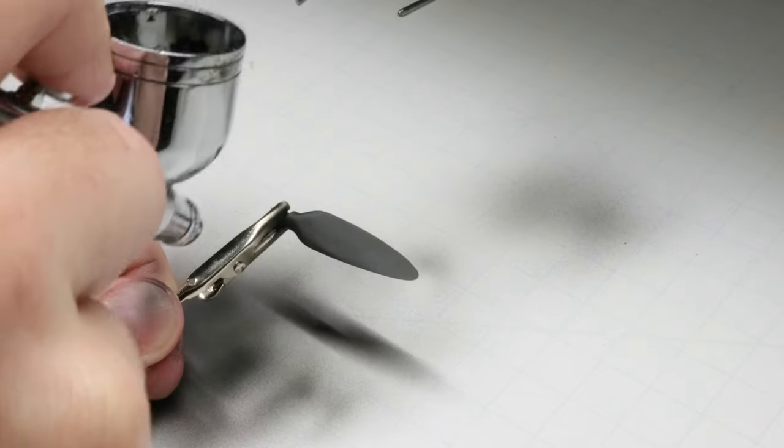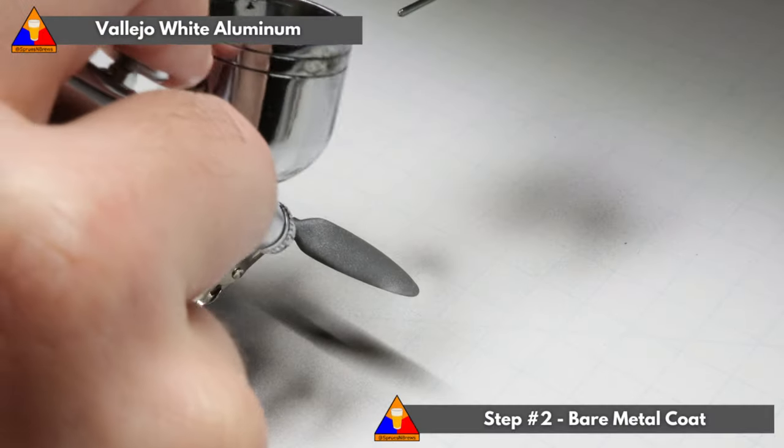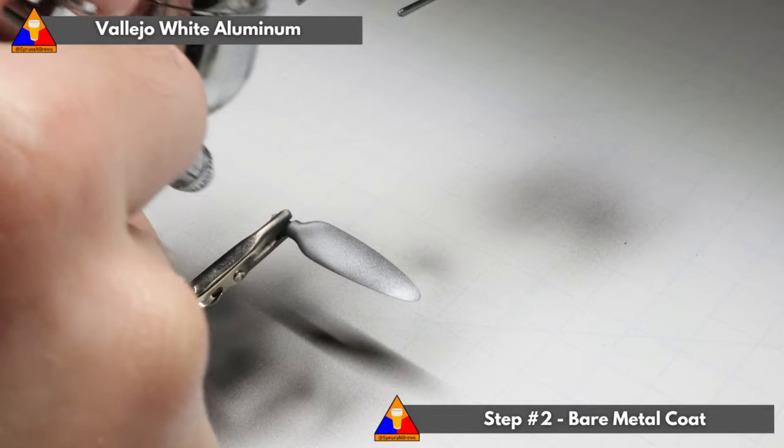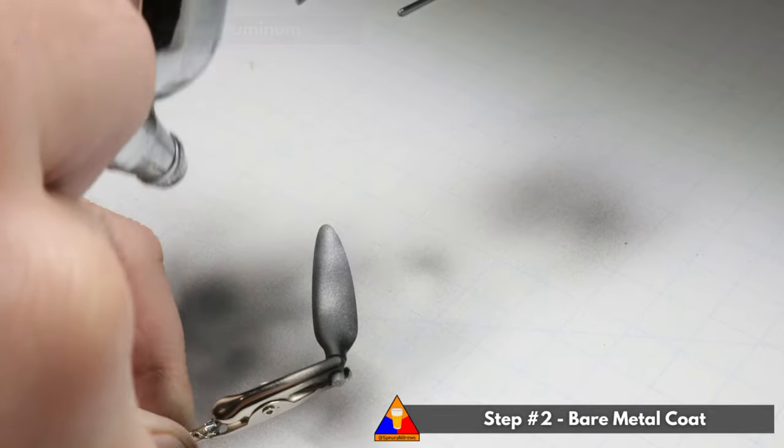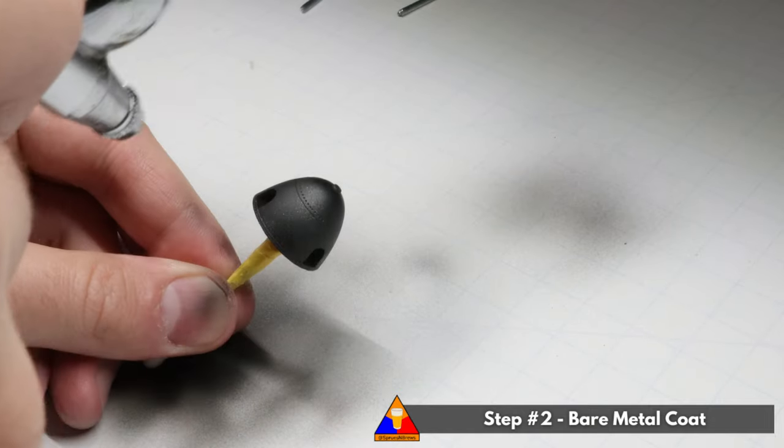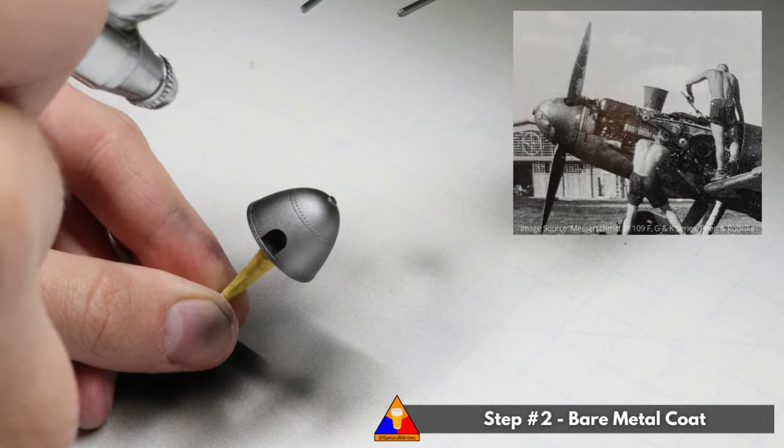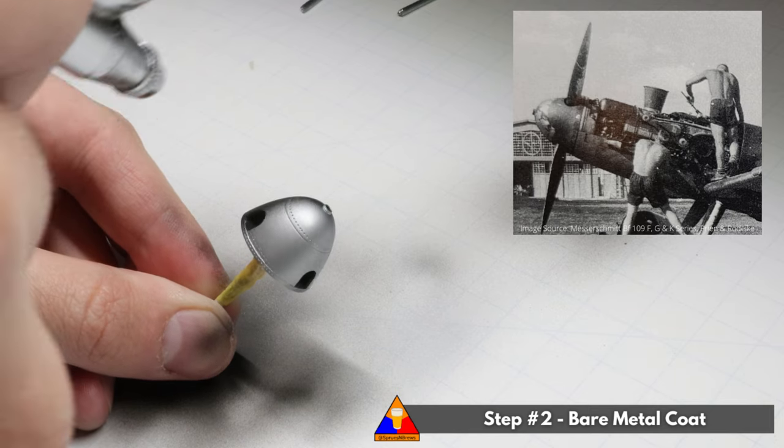After that, we're going to spray everything with a coat of Vallejo White Aluminum to give us our bare metal layer. This is going to be the deepest layer of paint we'll see in our finished product. In some photos of the most heavily worn Luftwaffe fighters, this bare metal layer is clearly visible on the nose cone.